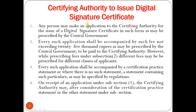Any person may make an application to the certifying authority for the issue of a digital signature certificate in such form as may be prescribed by the central government. Every certifying authority will have their own format where a person can fill the application along with required documents. Every such application shall be accompanied by fees not exceeding 25,000 rupees as prescribed by the central government, to be paid to the certifying authority.